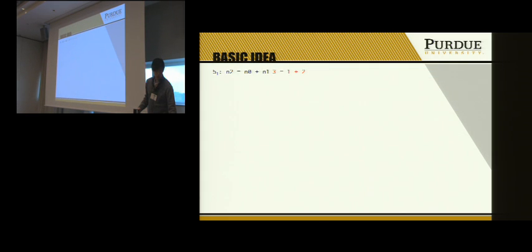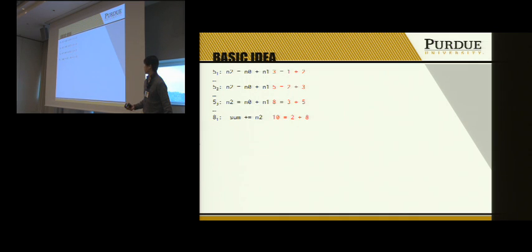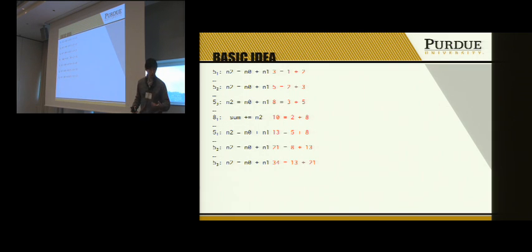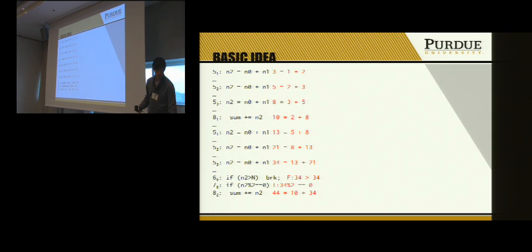Looking at the execution of each program, the correct implementation computes the sequence of Fibonacci numbers and adds even ones to the sum. For the Fibonacci number 34, the program first checks whether it exceeds the upper bound, then checks if the number is even, and in this case adds it to the sum.